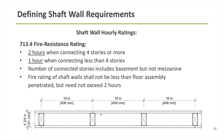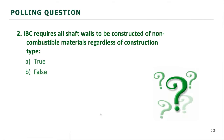Now we know what materials shaft walls can be framed with. The next thing we need to know is what are the fire resistance rating requirements. This is simply a function of how many stories that given shaft enclosure is connecting — not a function of what materials we're using. If our shaft enclosure is connecting four or more stories, those shaft walls need to be rated for two hours. If our shaft enclosure is connecting three or fewer stories, those shaft walls need to be rated for one hour.